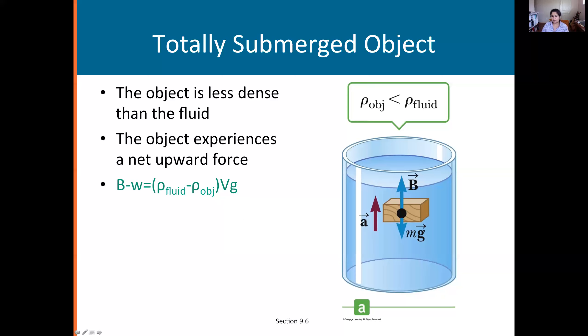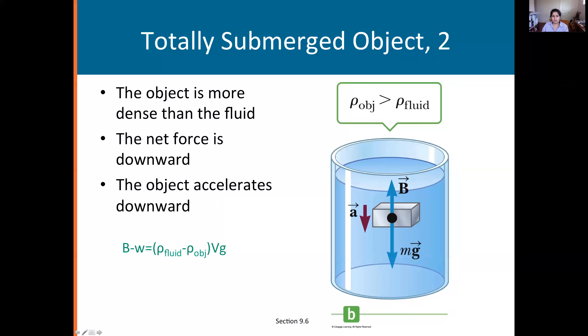When you have an object whose density is greater than the fluid density, exactly the reverse will happen. We have ρ_object greater than ρ_fluid, so we get a negative net force, which means it's downwards.